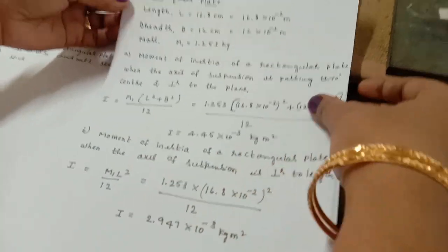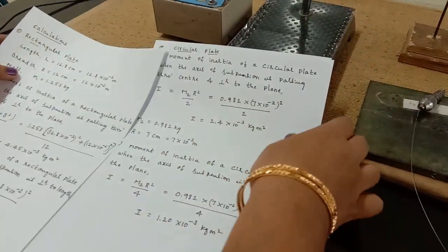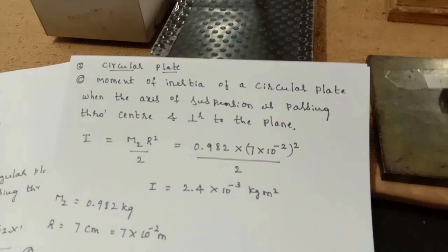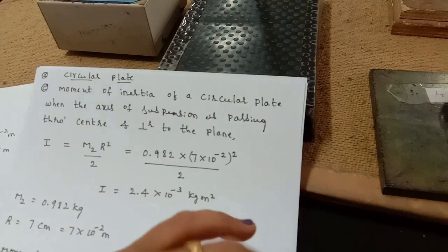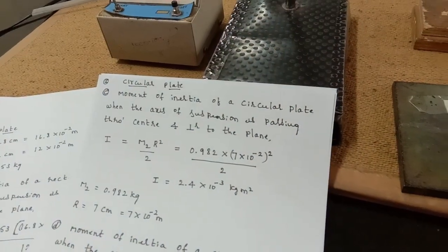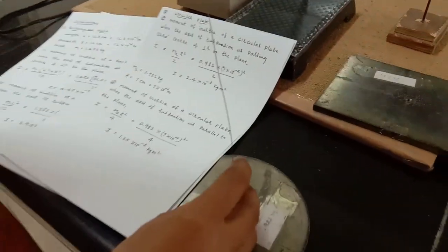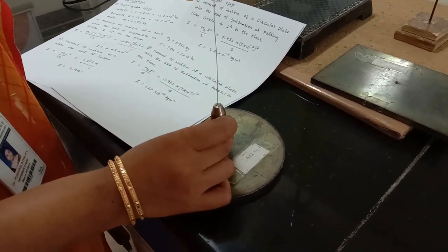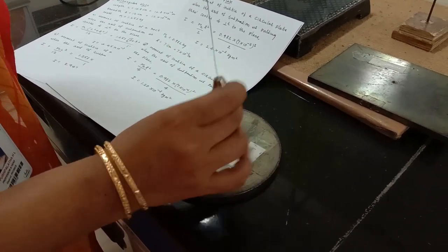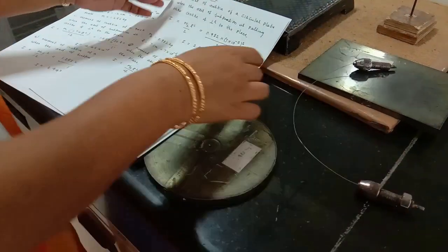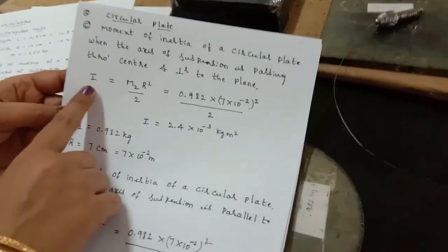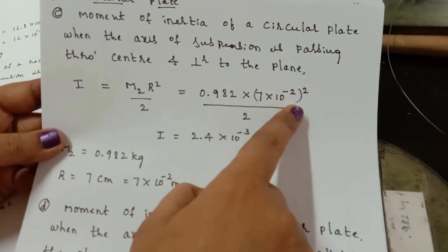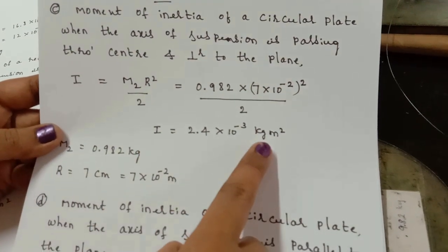For the circular plate, the moment of inertia when the axis of suspension passes through the center and is perpendicular to the plane can be calculated using the formula I = m₂r²/2. Substituting the values, you will get the moment of inertia.